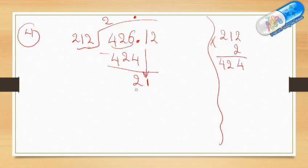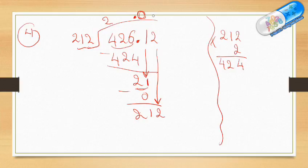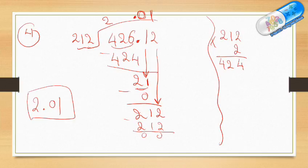Get down the 1 — and be careful, the 1 is after the decimal point, so any answer digit will be after the decimal point. 21 divided by 212: 21 is less than 212, so I put 0. 0 times 212 is 0, remainder is 21. Then get down the last digit 2, giving 212 divided by 212, which is exactly 1. 1 times 212 is 212, remainder 0. So the answer is 2.01.